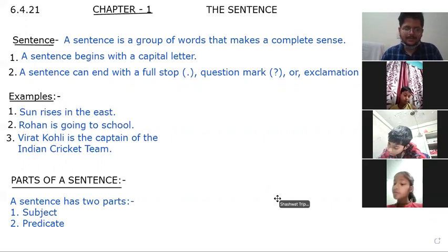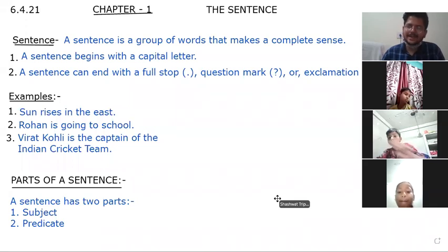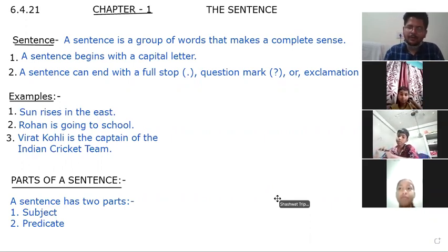Next is the parts of sentence. You write. Parts of sentence. How many parts are there? Two parts. One is the subject and second is the predicate. Write it down.